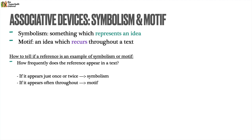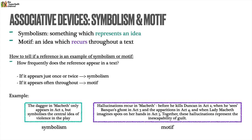An example from Macbeth: the dagger, which Macbeth uses to kill King Duncan, only appears in act two, but it symbolizes the central idea of violence in the play — that's symbolism. For motif, consider hallucinations, because they recur throughout the play: before Macbeth kills Duncan in act two, when he sees Banquo's ghost in act three, the apparitions in act four, and Lady Macbeth imagining spots on her hands in act five. Altogether, these hallucination references represent the inescapability of guilt, and because they appear across acts two, three, four, and five, they constitute a motif rather than a symbol.